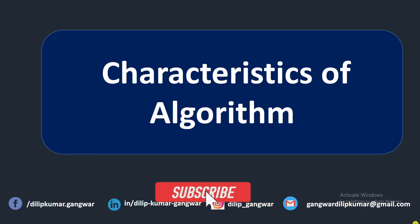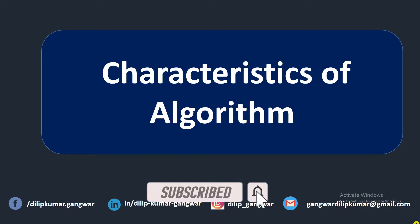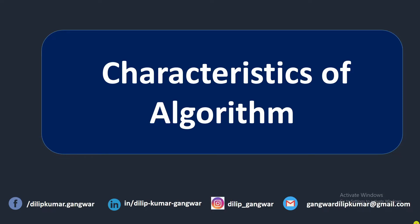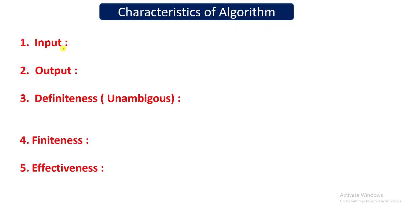In this video we will understand what are the characteristics or properties of a good algorithm. In the previous video we already saw that an algorithm is an approach or logic to solve a particular computational problem. For example, we can have a problem like adding two numbers, or finding the factorial of a number, and we write the various steps to solve that problem.